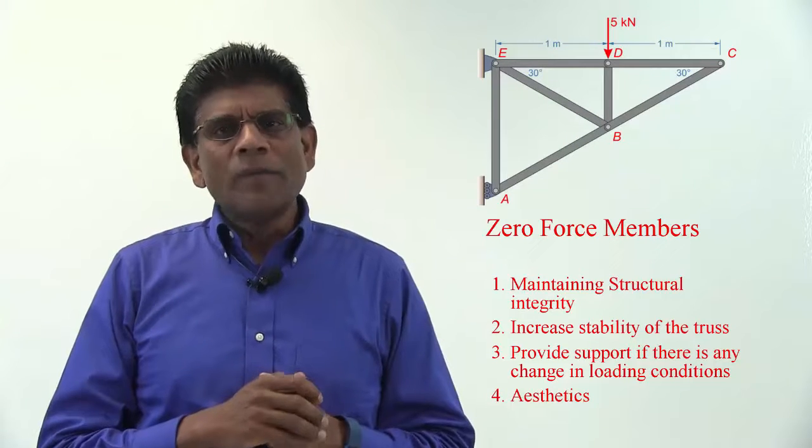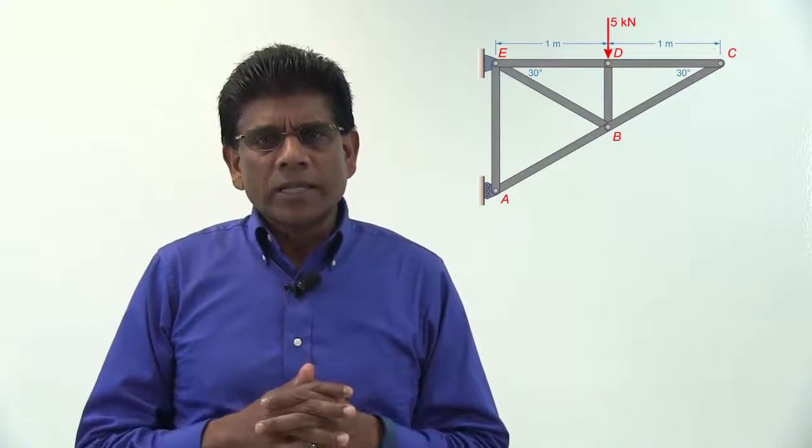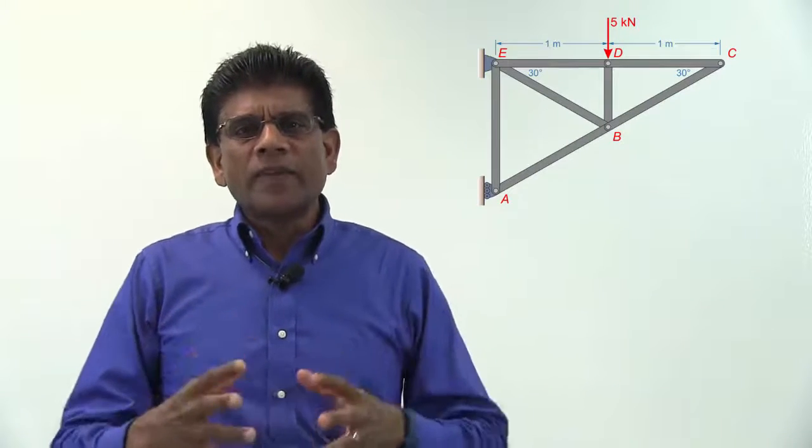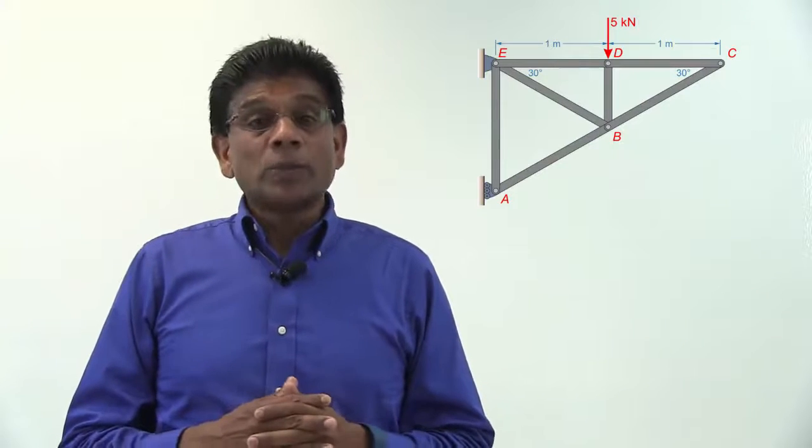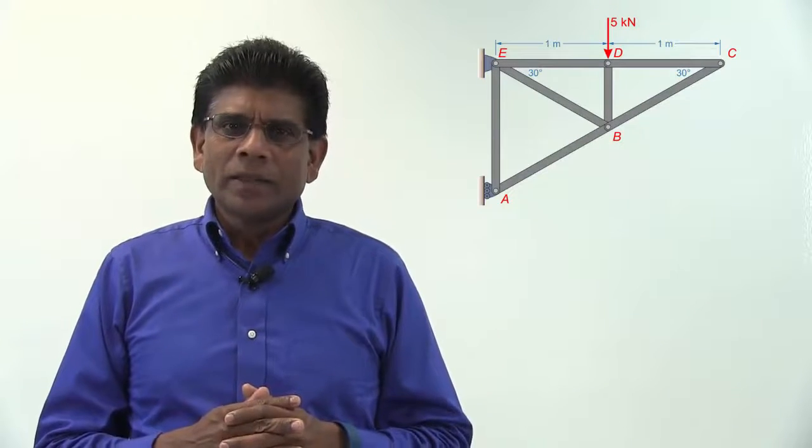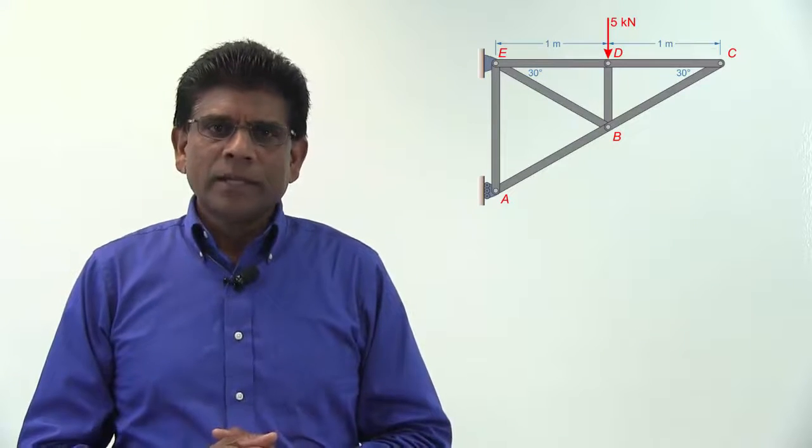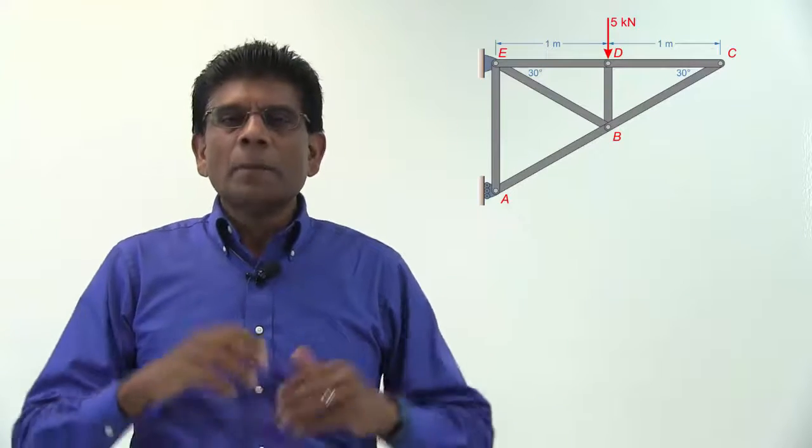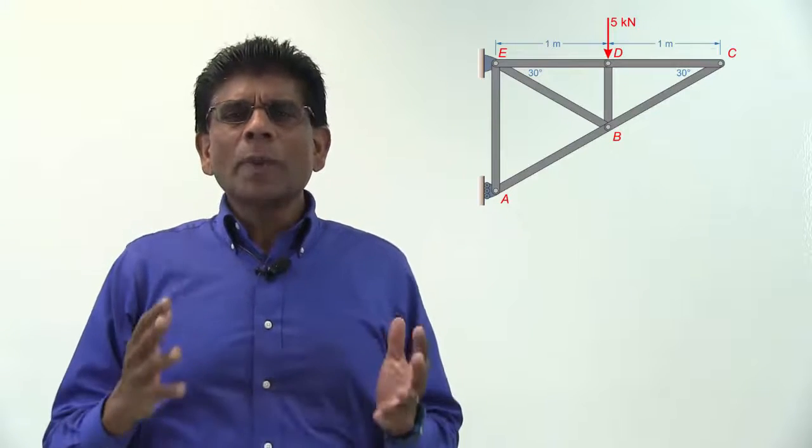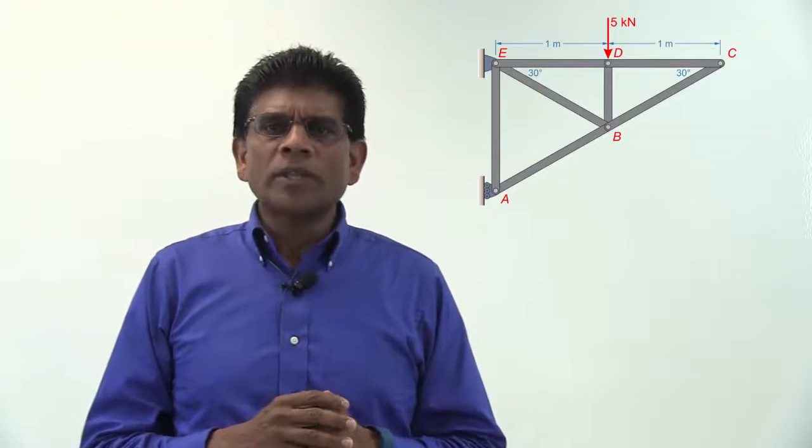I will discuss this when we solve more problems later. As you can see, if there is a way to identify these members without drawing free body diagrams, you can speed up your calculations. This also helps to develop a better understanding of trusses. It turns out we can actually identify zero-force members by inspection, just by looking at it using a few rules. So, let us go over these simple rules.